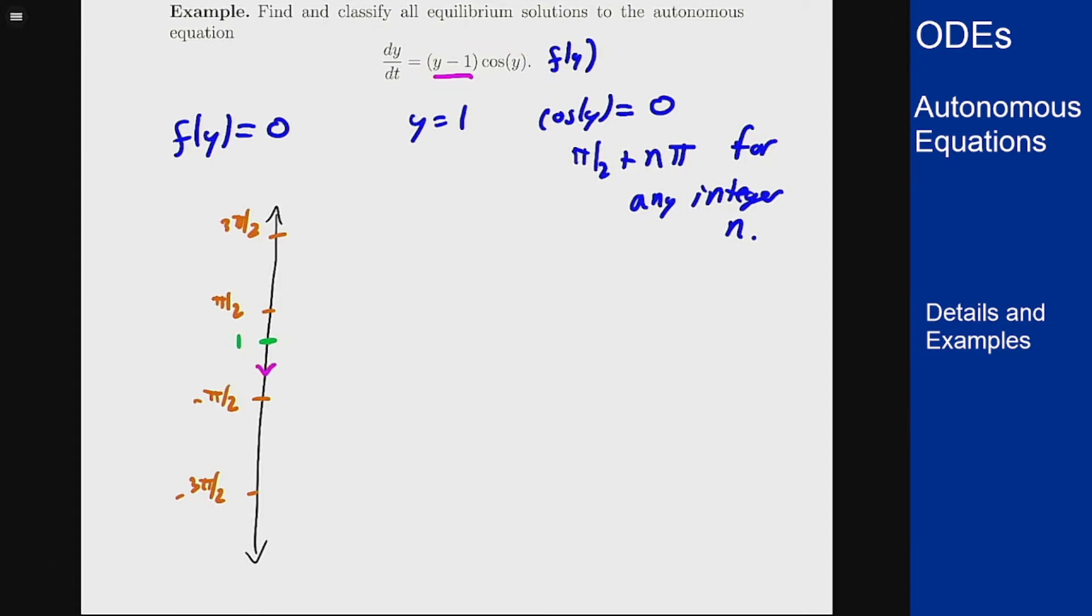If I plug in, say, -π, I'll get something very negative here. Negative 1 minus π is negative, times cos(π) which is negative 1, therefore this will be positive.